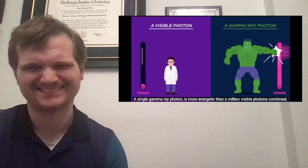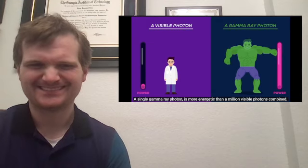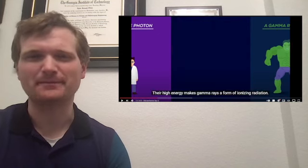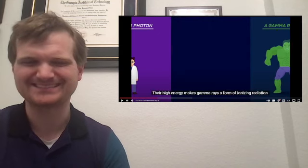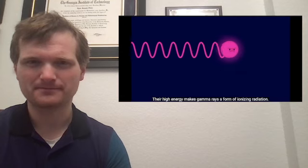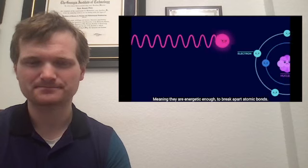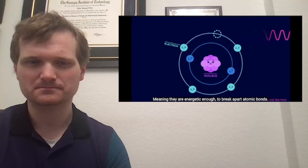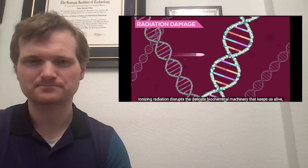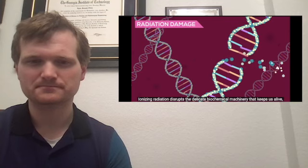Gamma rays are incredibly powerful. A single gamma ray photon is more energetic than a million visible photons combined. Their high energy makes gamma rays a form of ionizing radiation, meaning they are energetic enough to break apart atomic bonds. This makes them dangerous to you and me. Ionizing radiation disrupts the delicate biochemical machinery that keeps us alive, like a 9mm bullet through a clock.